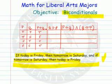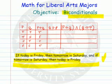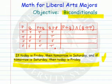Remember, we've switched them in the second column, so now this is the antecedent and this is the consequent. So true/true is true, false/true is true, true/false is false, and false/false is true.